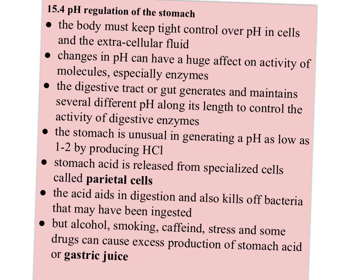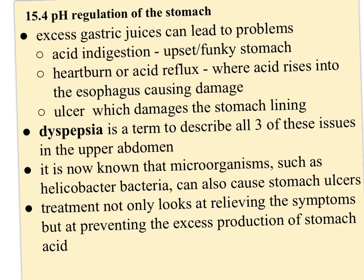But alcohol, smoking, caffeine, stress, and some drugs can cause excess production of stomach acid or gastric juice, and that's when people generally have issues. Excess gastric juices can lead to several problems: acid indigestion, which is like when you have an upset or funky stomach; heartburn, also known as acid reflux or GERD, where the acid rises up into the esophagus and causes damage over time; or an ulcer, which damages the stomach lining. Dyspepsia is a term to describe all three of these issues in the upper abdomen.